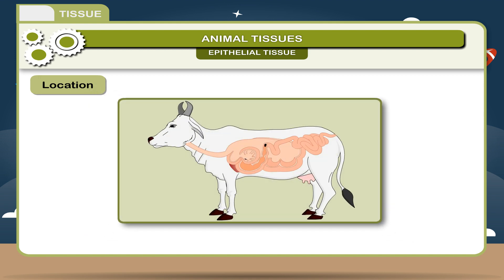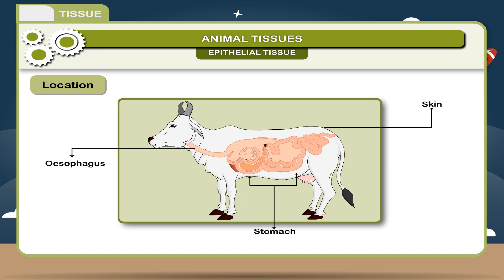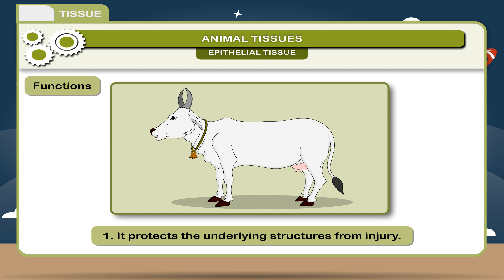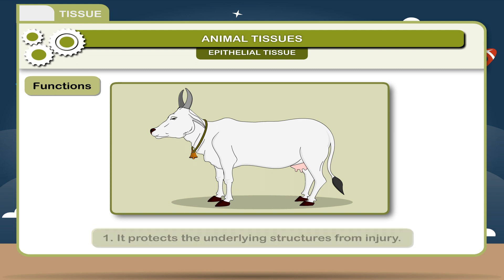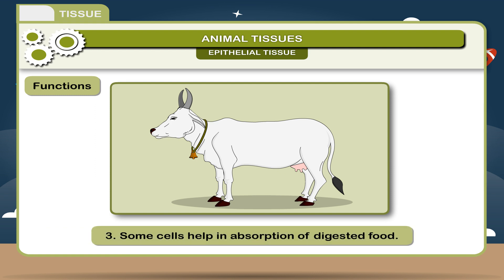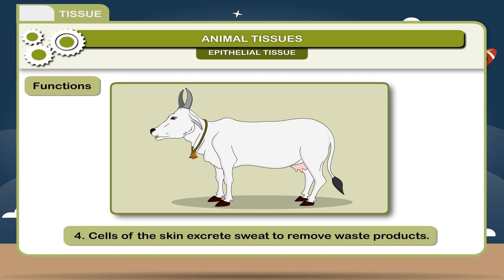Location: Epithelial tissues are present on the outer surface of the skin and line the internal organs like esophagus, stomach, intestine, and heart. Functions: 1. It protects the underlying structures from injury. 2. The cells present in the stomach secrete juices which help in digestion. 3. Some cells help in absorption of digested food. 4. Cells of the skin excrete sweat to remove waste products.